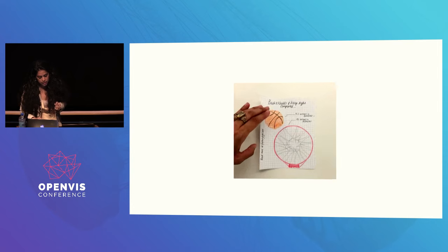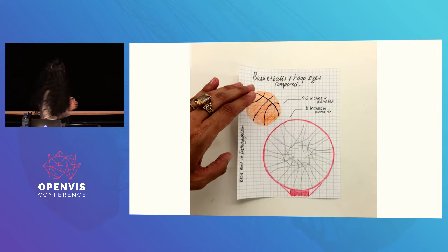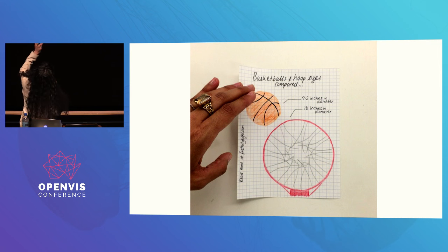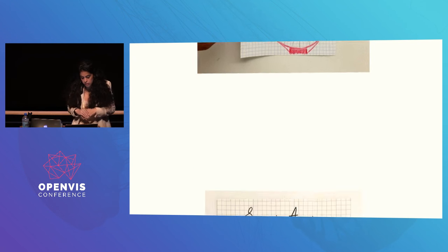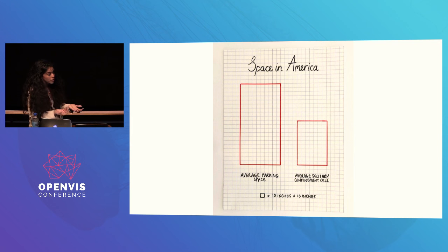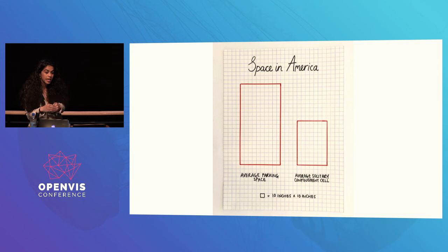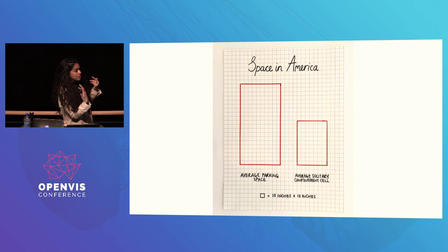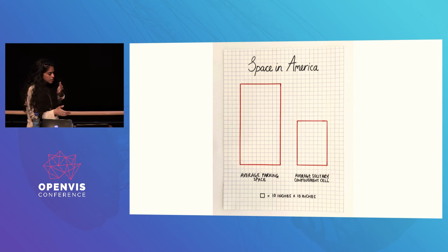Speaking of scale — here's another one thinking about the relative size of a basketball and the hoop. This slightly more serious one is about scale too: contrasting the average parking space in America with the average solitary confinement cell. What was quite good about this was that I got online abuse from both sides of the spectrum — people saying 'how dare you imply prisoners have too much space,' and others claiming I was implying they had too little space — which I think sometimes bodes quite well for the way you've visualized something.